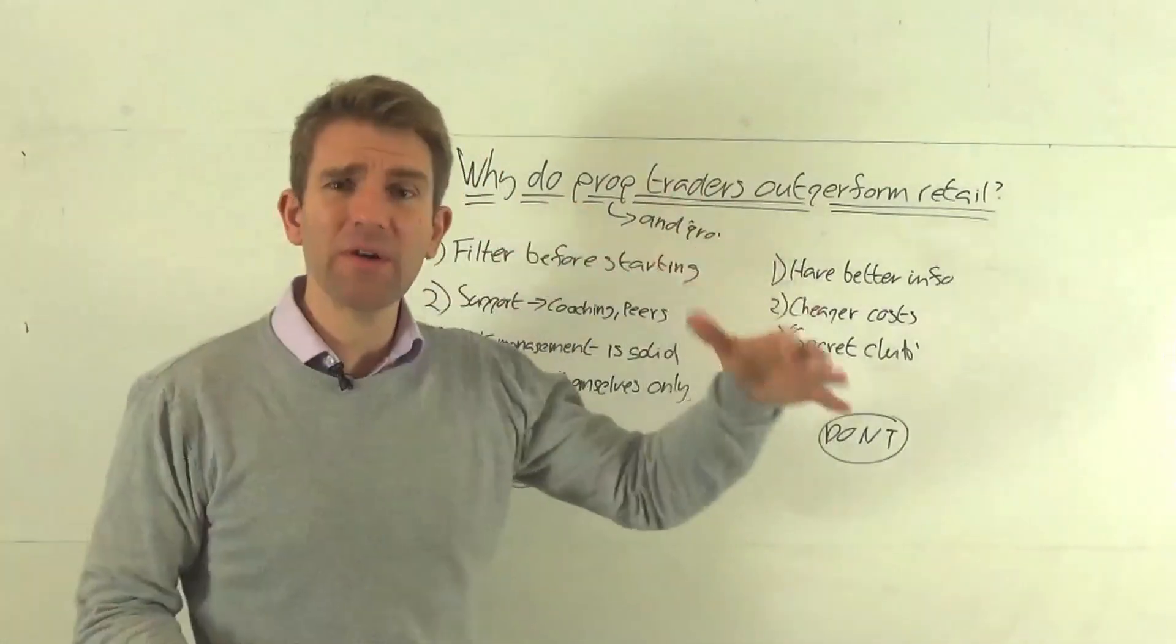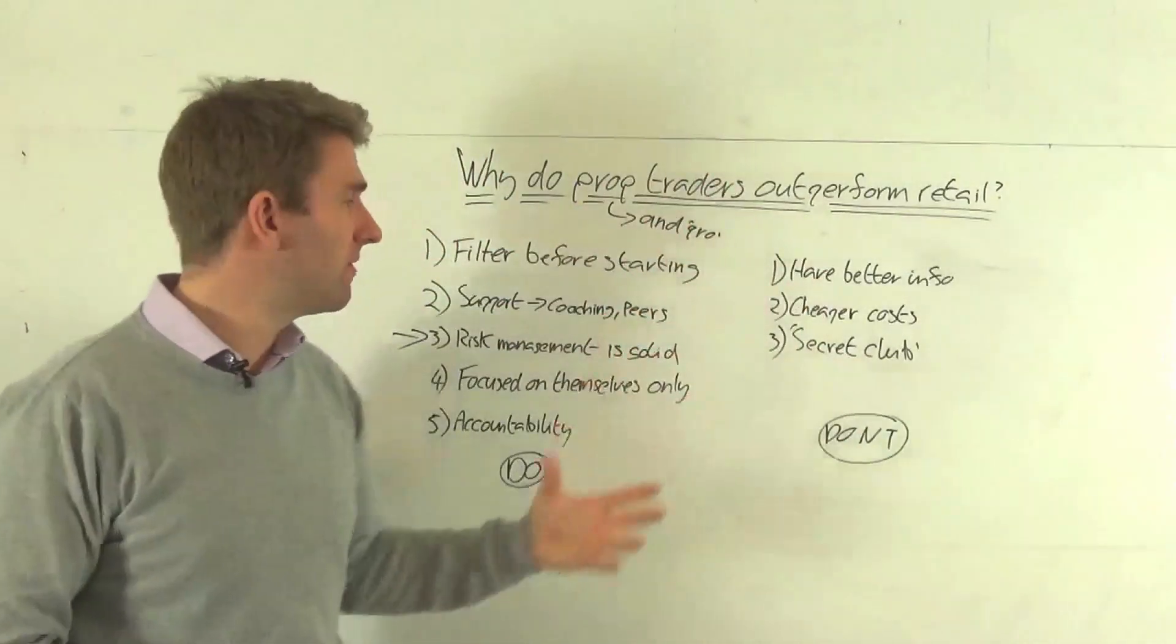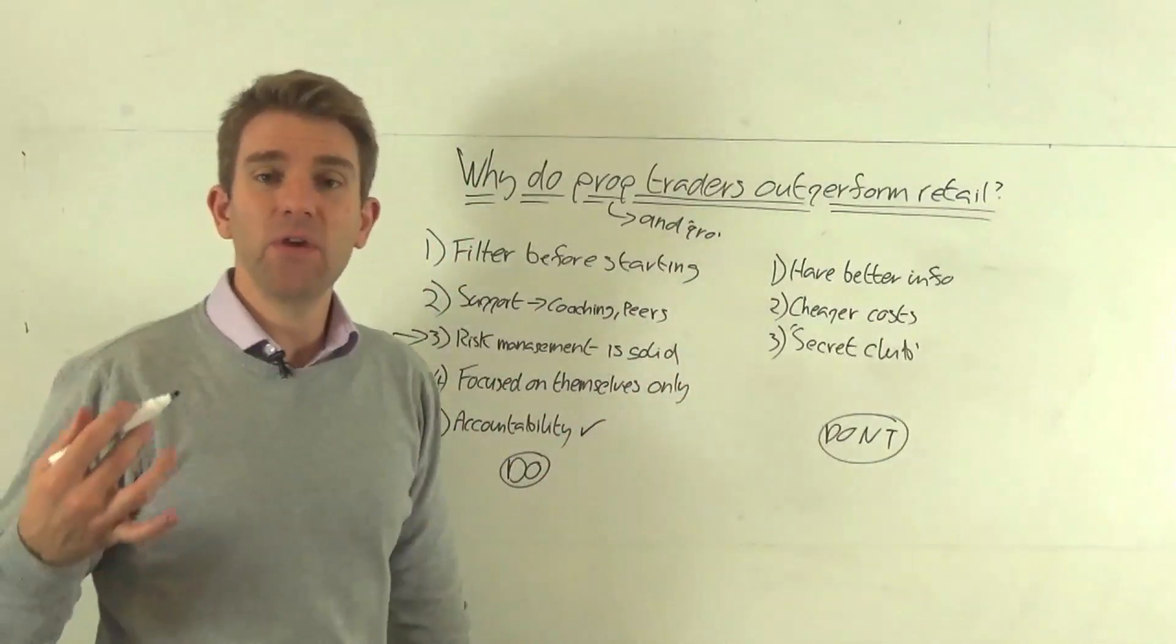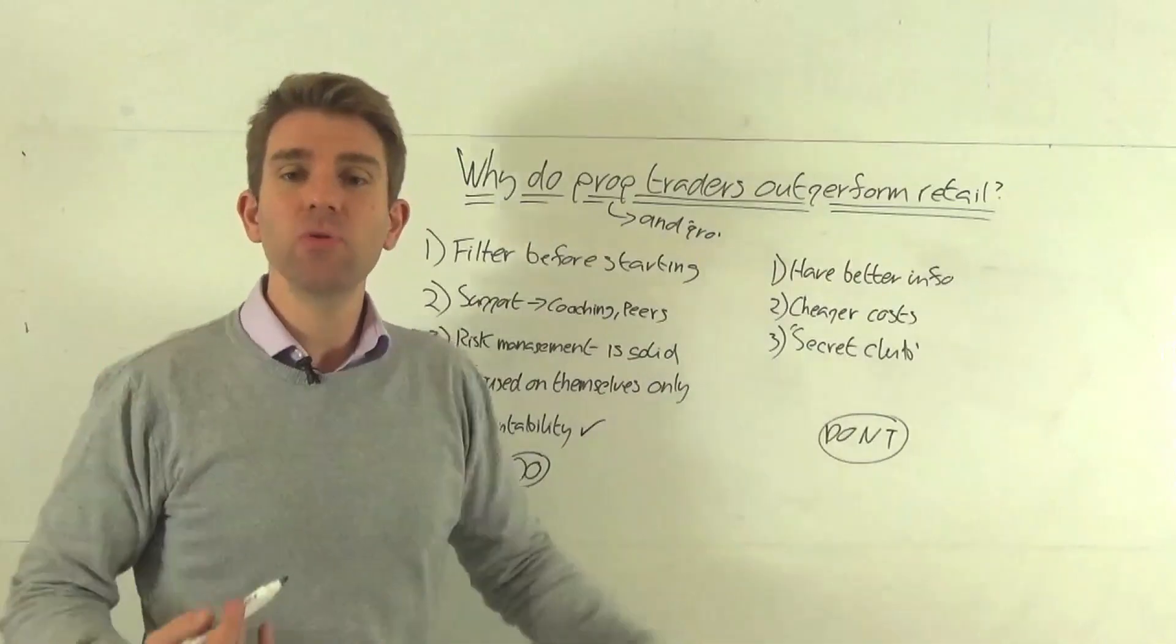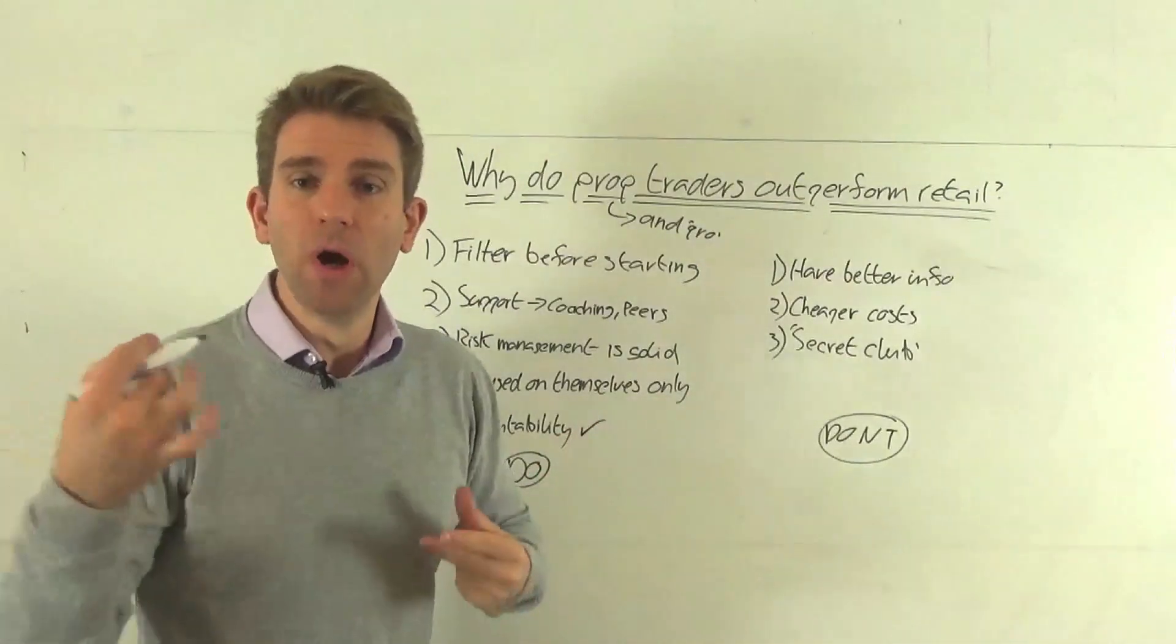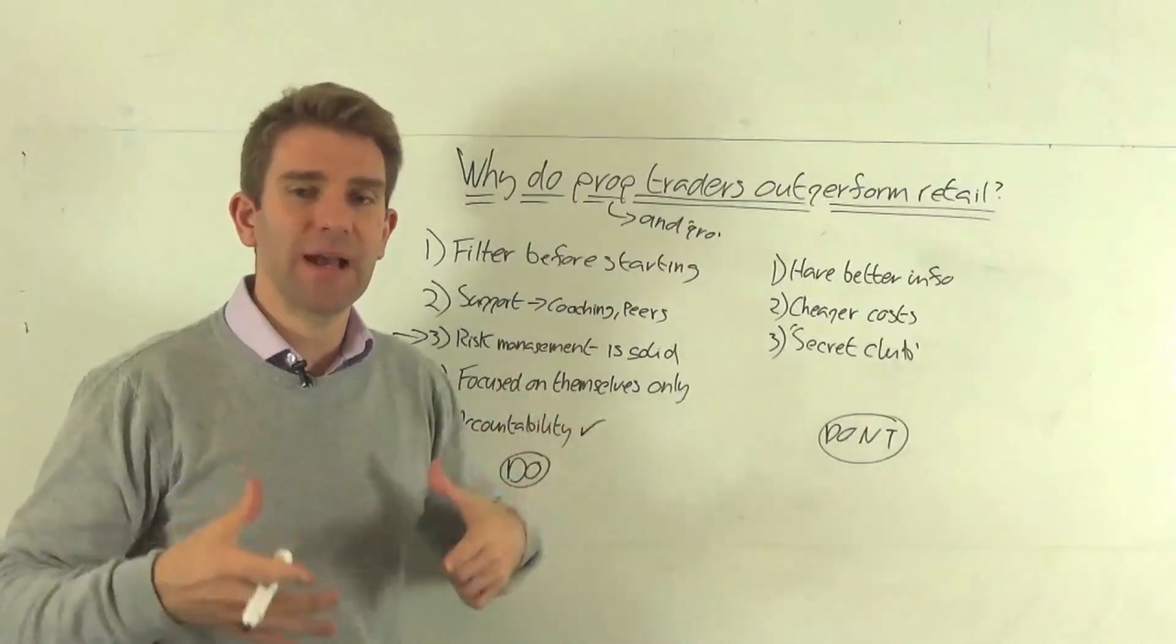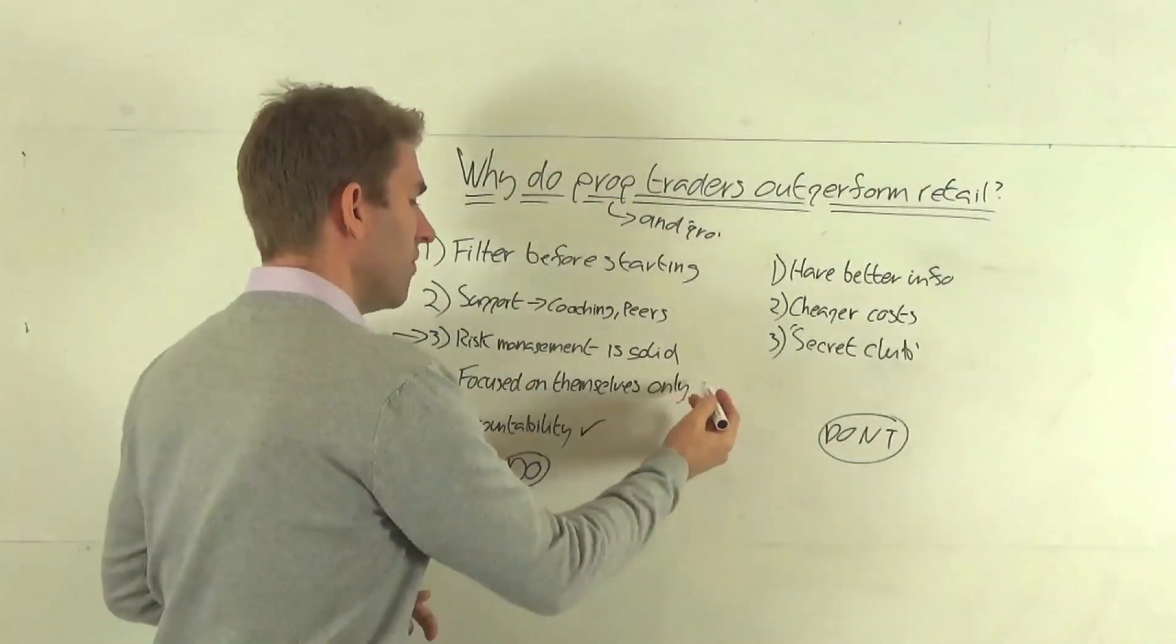So how can we kind of emulate this in a retail environment? The first thing is to get yourself some accountability, however you do that, whether you're accountable to a mentor, whether you're accountable to a wife or husband or whatever it may be. So you've got some accountability. And then again, focus on yourself only. Forget about what everyone else is doing.